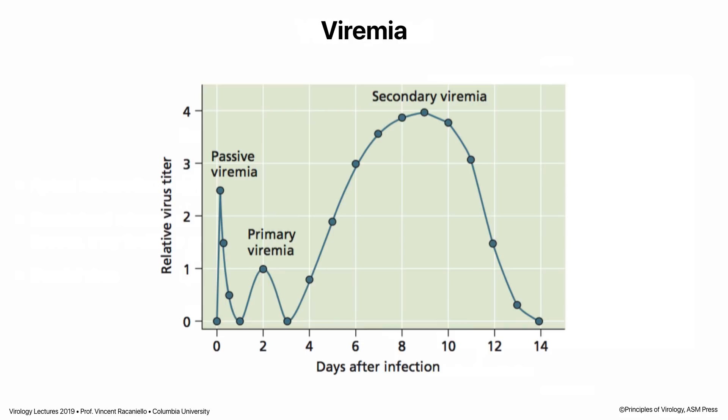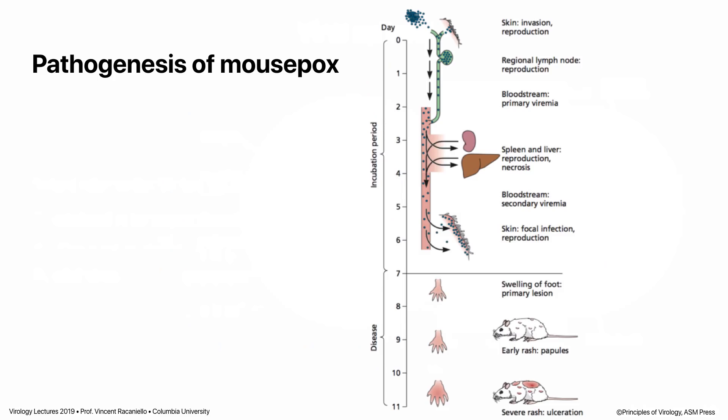Here's a dirty secret: if we threw away any pint of blood that was virus positive, we would have no blood supply, because every pint of blood donated is full of virus of some sort. But unless we're sure it causes a disease, we're okay giving it to people. So when you get blood, you're getting circoviruses or anellovirus — you're not getting HIV, HBV, or hepatitis C. We test for all of those, but there are lots of other viruses we don't test for.